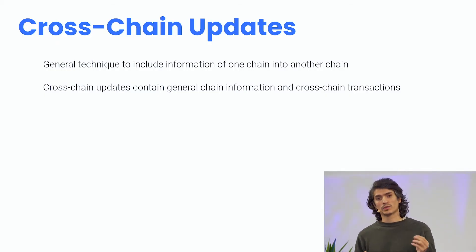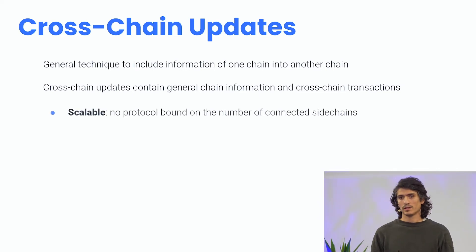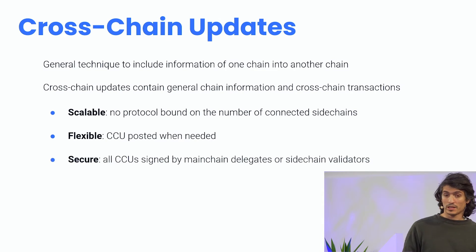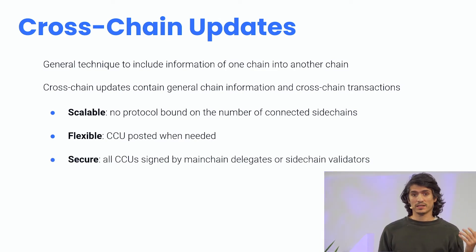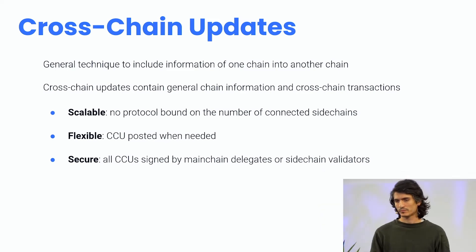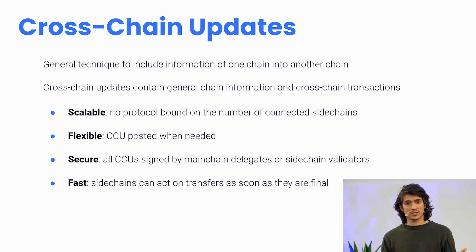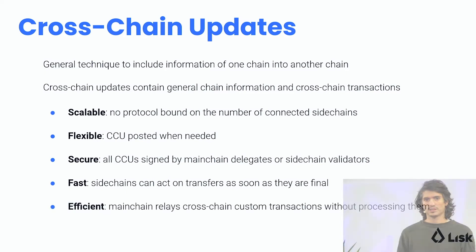Let me summarize the most important features of cross-chain updates. They're scalable — there is no hard protocol bound on the number of sidechains that can connect to the main chain and participate in interoperability. They're flexible — sidechains can post cross-chain updates only when needed; if there are no cross-chain transactions, there is no need to post them. They are secure because cross-chain updates are signed either by main chain delegates or by sidechain validators. They're fast — as soon as a block is finalized, the cross-chain transactions included in it can already be packed in a cross-chain update and posted to another chain. Finally, they are efficient, because the main chain only relays cross-chain custom transactions without actually processing them.